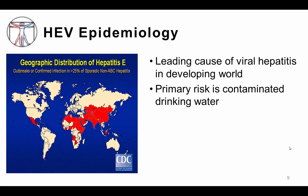Hepatitis E virus is actually the leading cause of acute viral hepatitis in the developing world, with an estimated 20 million cases annually. The overall burden of disease is highest in parts of the world where clean drinking water is scarce, as fecal contamination of drinking water is a major route of transmission. In the developed world, where disease burden is lower, consumption of undercooked meats is another well-recognized mode of transmission.